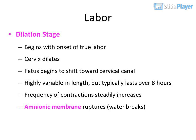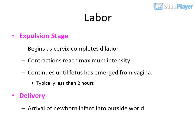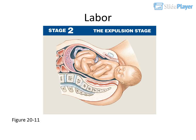Labor has three stages. In the dilation stage, labor begins, the cervix dilates, and the fetus shifts toward the cervical canal. This stage is highly variable in length but typically lasts over eight hours; frequency of contractions steadily increases and the amniotic membrane ruptures. In the expulsion stage, delivery begins as the cervix completes dilation; contractions reach maximum intensity and continue until the fetus has emerged from the vagina, typically lasting less than two hours.